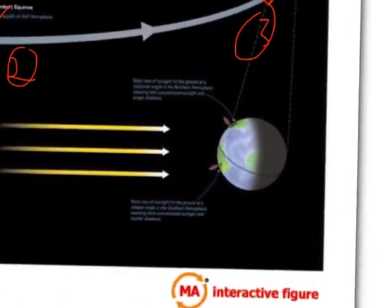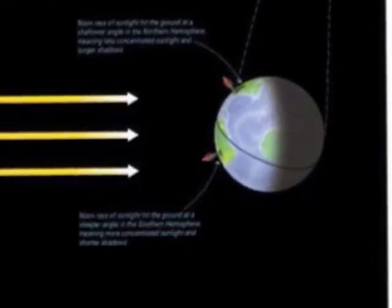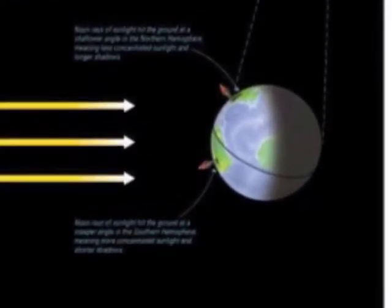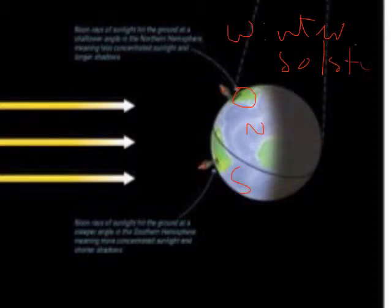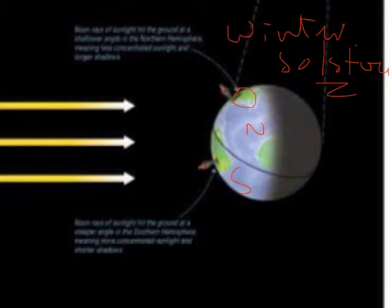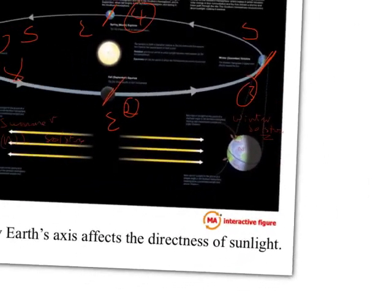Six months later at the other solstice, around December 21st, the author's detail shows a shadow for the northern hemisphere — this is our winter solstice. It happens on December 21st or so.